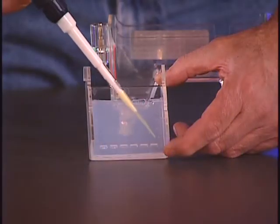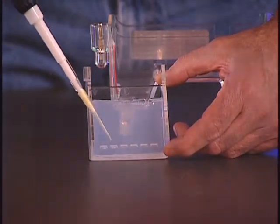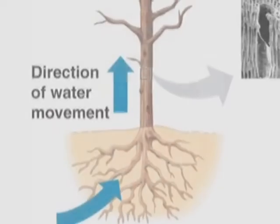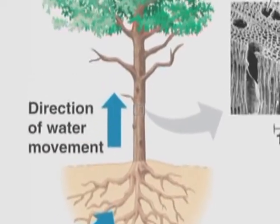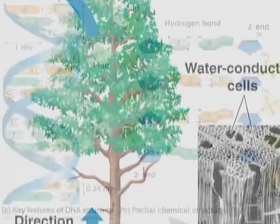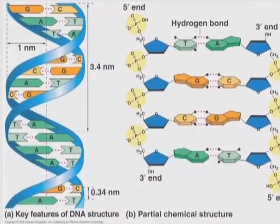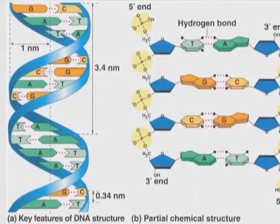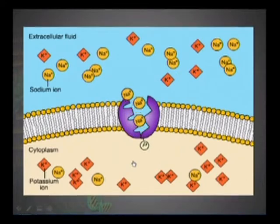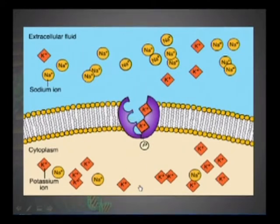To understand these processes, you will need a background in some very basic chemistry. This will help you understand the biochemical processes required for life, as well as the energy flow in ecosystems. Additionally, you will then be able to understand the relationship between DNA and an organism's physical and behavioral attributes, and how that genetic material is passed from generation to generation.